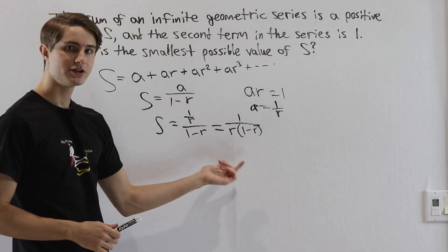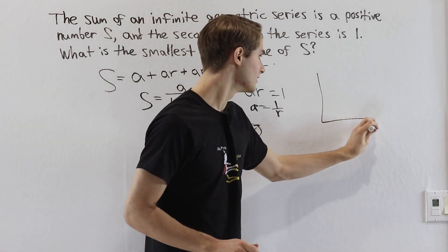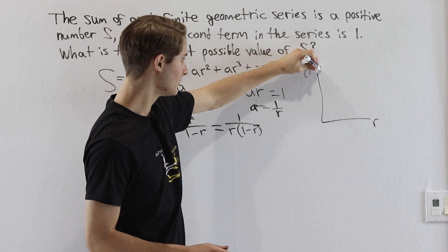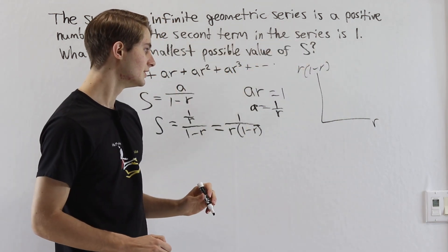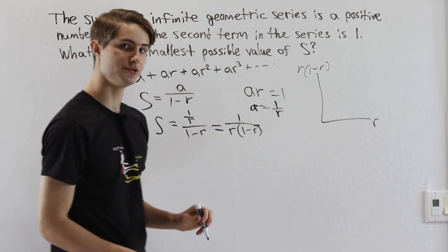Now you could try to solve this by completing the square, and that would work as well, but I'm going to do it using graphing. If we have r on a horizontal axis, and r times 1 minus r on the vertical, what we're going to have is that this function equals 0 when r equals 0, and it also equals 0 when r equals 1.